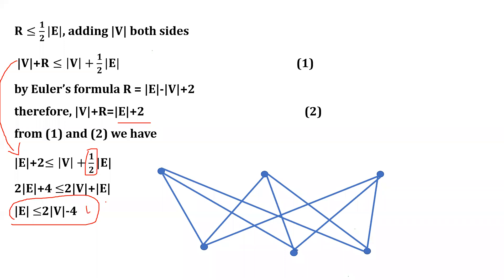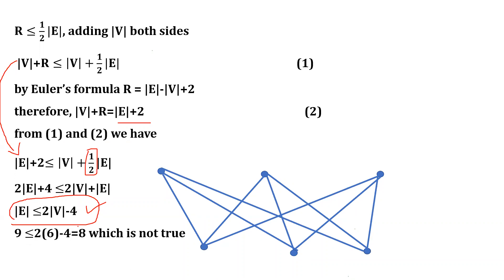If K_{3,3} were planar, this relation e ≤ 2v − 4 must be satisfied. But checking K_{3,3} with e = 9 and v = 6: 2(6) − 4 = 8, and 9 ≤ 8 is not true. This relation is not satisfied, which is a contradiction. Therefore K_{3,3} is non-planar.